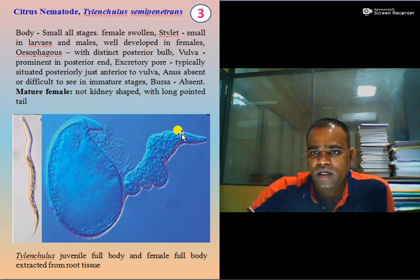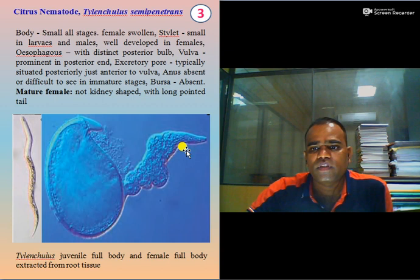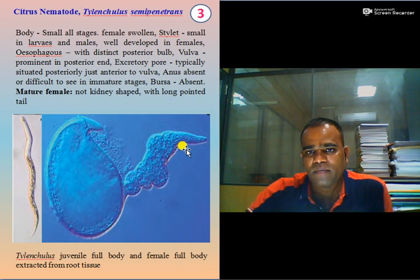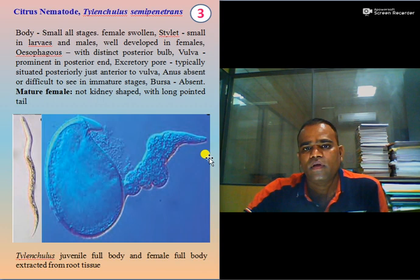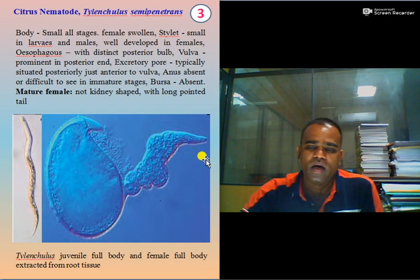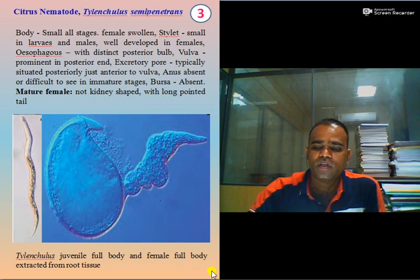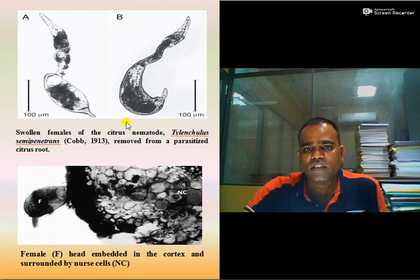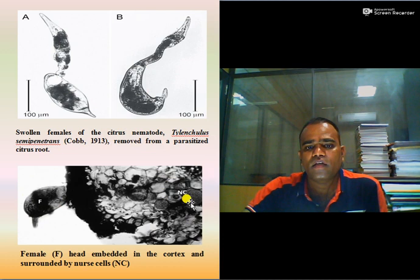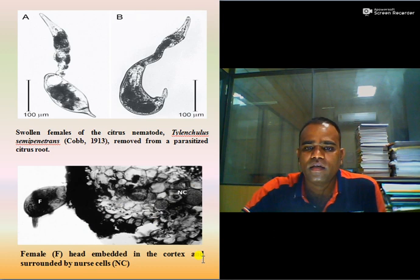The excretory pore is one of the exceptional features of this nematode, giving rise to secretion of a gelatinous matrix which retains the eggs of females. Bursa are absent in males. Anus is also absent. The mature female is kidney-shaped with a long pointed tail. Here we can see swollen females of citrus nematode, Tylenchulus semipenetrans, removed from parasitized citrus roots, showing the female with its head embedded in root tissue.